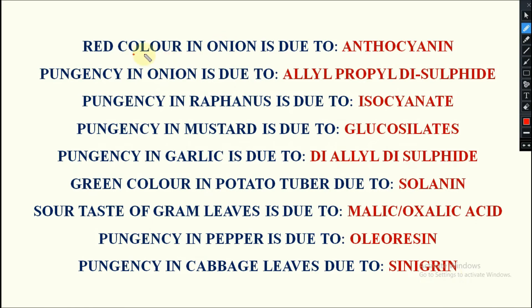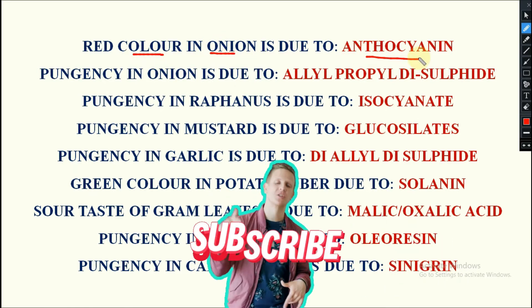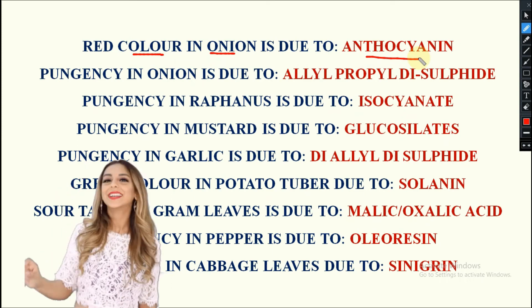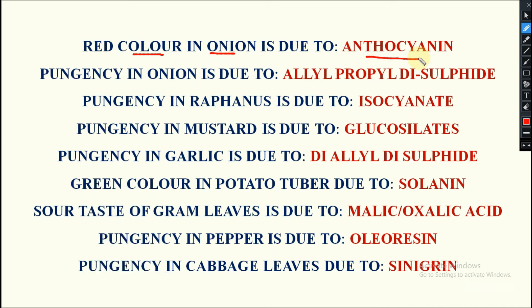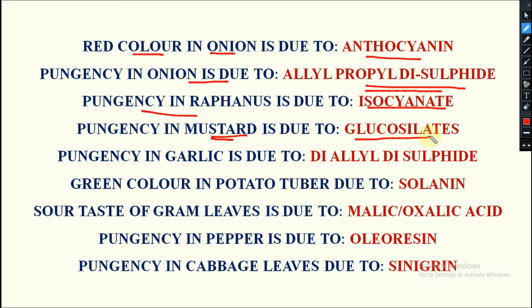Red color in onion is due to anthocyanin — so red color in apple, carrot, or onion is all due to anthocyanin. Pungency in onion is due to allyl propyl disulfide. In raphanus, pungency is due to isothiocyanate. In mustard, pungency is due to glucosinolates. In garlic, pungency is due to diallyl disulfide. In potato, green color is due to solanine.